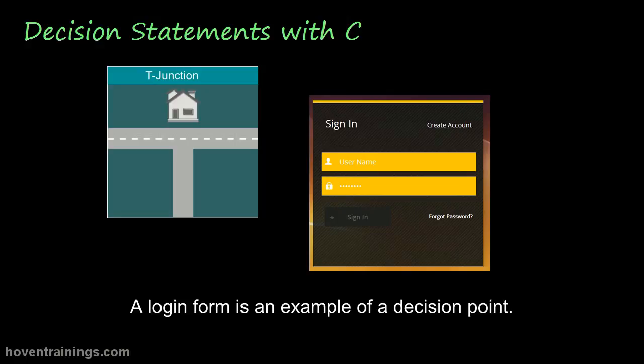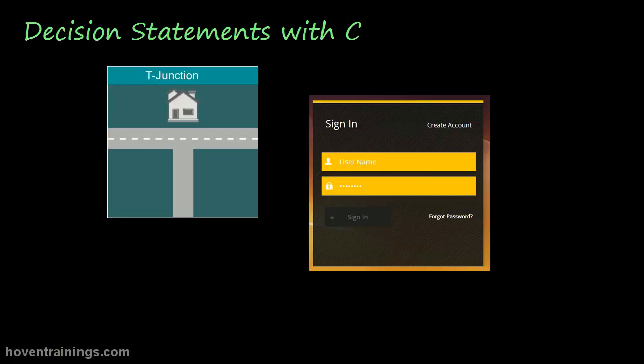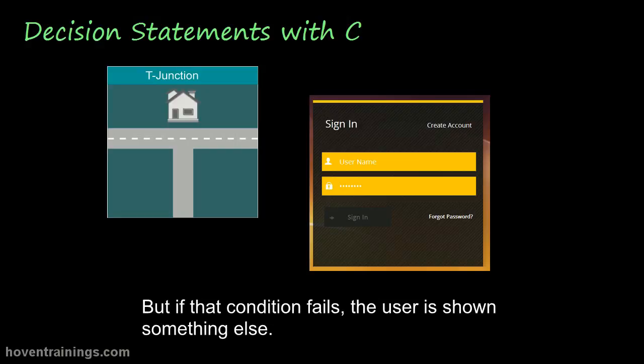A login form is an example of a decision point. The correctness of user and password is the condition here. If they are correct the user is shown some page. But if that condition fails, the user is shown something else.